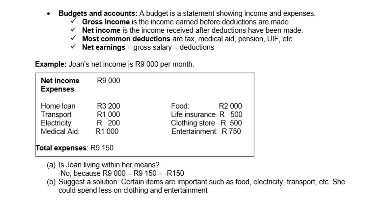Let's look at budgets and accounts. A budget is a statement showing income and expenses. Gross income is the income earned before deductions are made. Net income is income received after deductions have been made. The most common deductions are tax, medical aid, pension fund, and UIF — that is the unemployment fund. Net earnings is normally gross salary minus deductions.